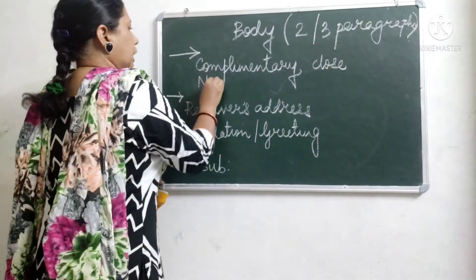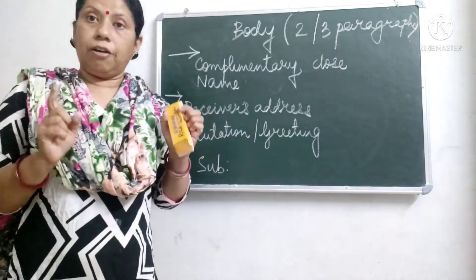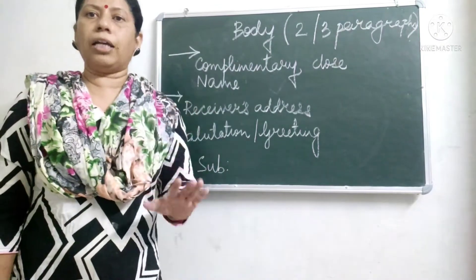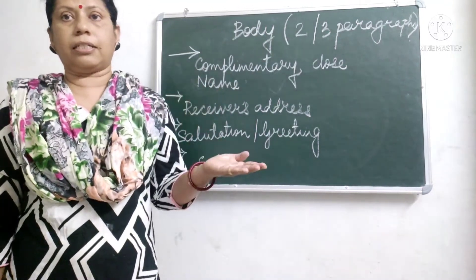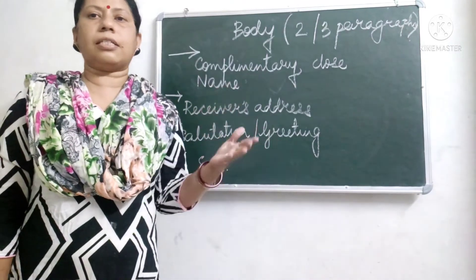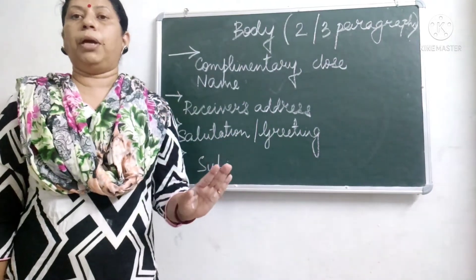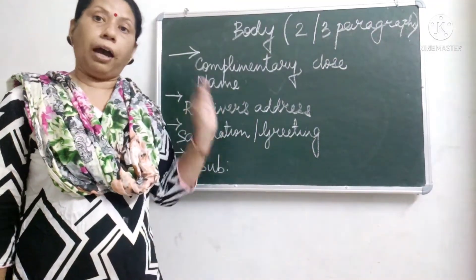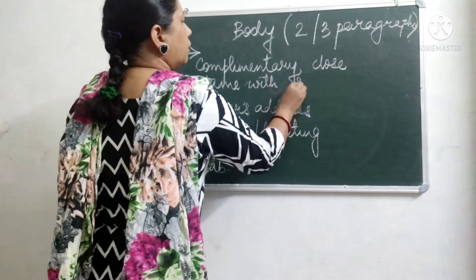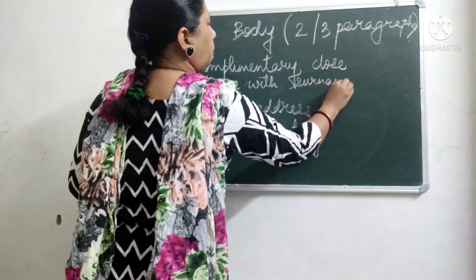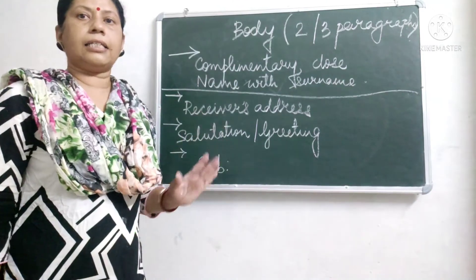Then you have the complimentary close, followed by your name. When you write your name at the end in formal letter writing, remember you should write your surname also. But when you are writing an informal letter — that is a friendly letter to your parents, brothers, sisters, cousins, or relatives — you need not write your surname. In the formal letter you have to write your surname. So here I am specifying name with surname. This is the total format of your formal letter writing.